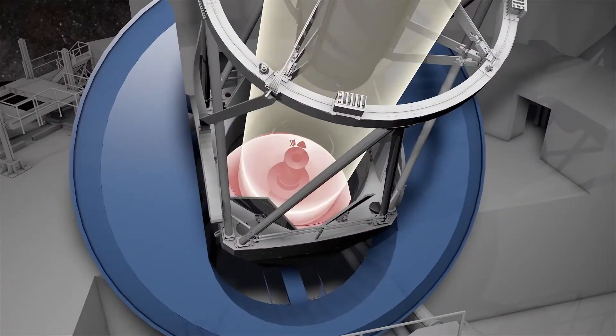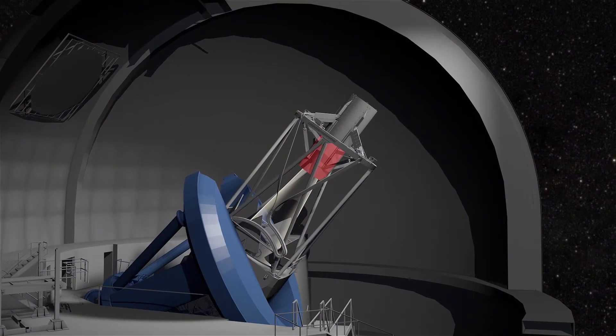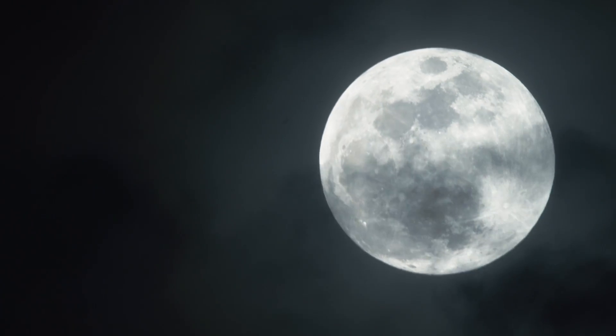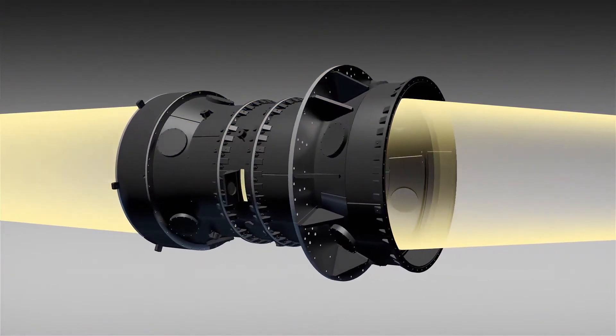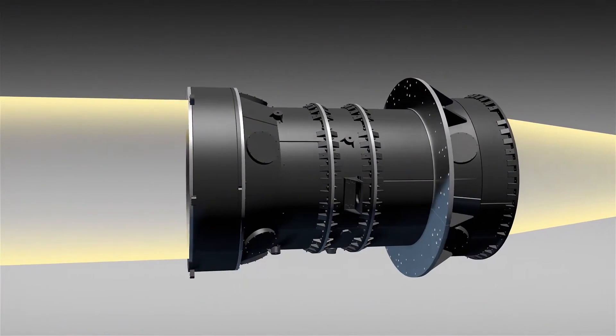The process begins with light reflecting off DESI's 15-ton primary mirror, then passing through six large lenses that provide a wide, highly focused view of the sky, an area 38 times larger than the full moon. These lenses are housed in a device that can be adjusted with micrometer precision, ensuring perfect alignment.